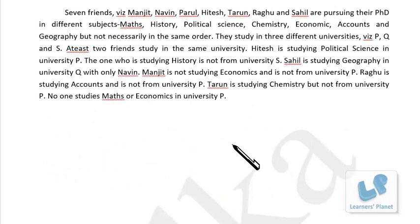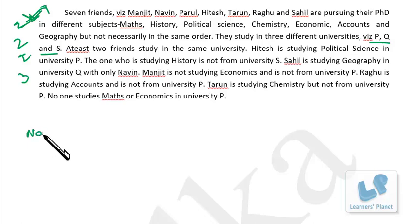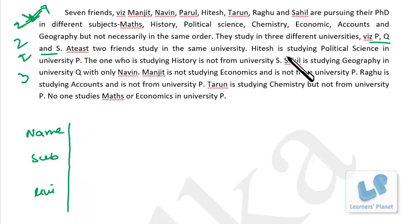Seven friends are pursuing their PhD in different subjects and study in three different universities P, Q and S. At least two friends study in the same university, so the combination is either 2-2-3 or similar. There are three variables: name, subject, and university. Hitesh is studying political science in university P, so we write Hitesh, political science, university P.